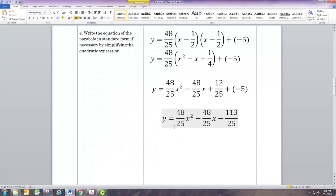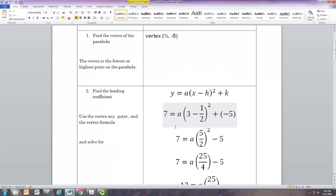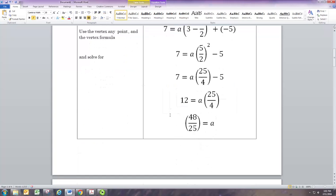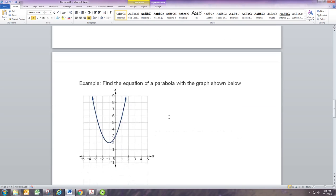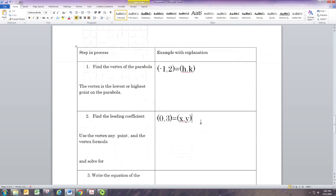We have that vertex formula, so we'll use that to find the value of a, the leading coefficient. Let's replace h with negative 1 and k with 2. Just replacing the vertex coordinates. Another point will be used to replace x and y, and we're using x is 0 and y is 3.